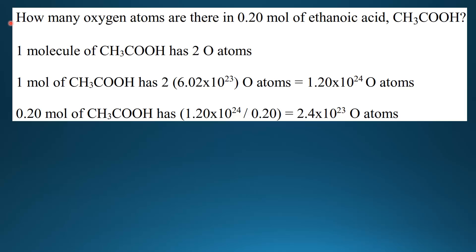Let's move on to the next example. How many oxygen atoms are there in 0.20 moles of ethanoic acid? One molecule of ethanoic acid has two oxygen atoms, so one mole of ethanoic acid has two times Avogadro's constant of oxygen atoms, which equals 1.20 times 10 to the 24 oxygen atoms. But the question is asking for 0.20 moles, so we divide 1.20 times 10 to the 24 by 0.20, and that equals 2.4 times 10 to the 23 oxygen atoms in 0.20 moles of ethanoic acid.